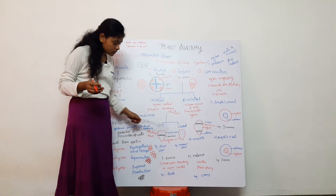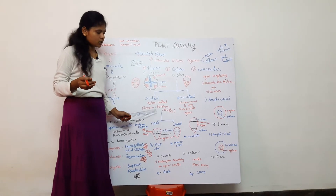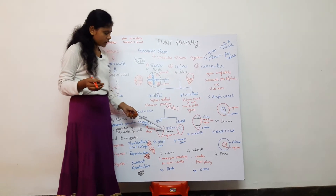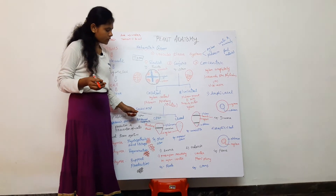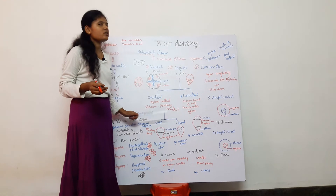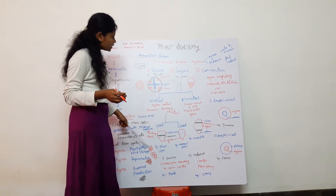So if there is a cambium present, it is called the open type. If cambium is absent, it is the closed type. This should be very clear.